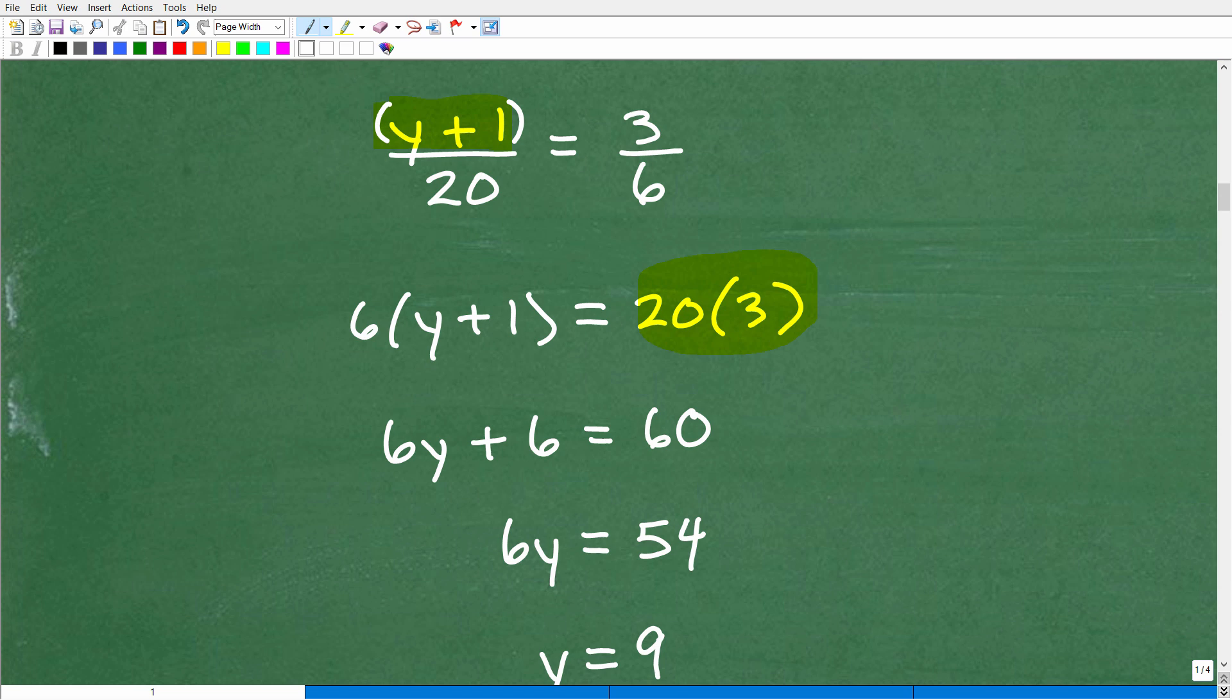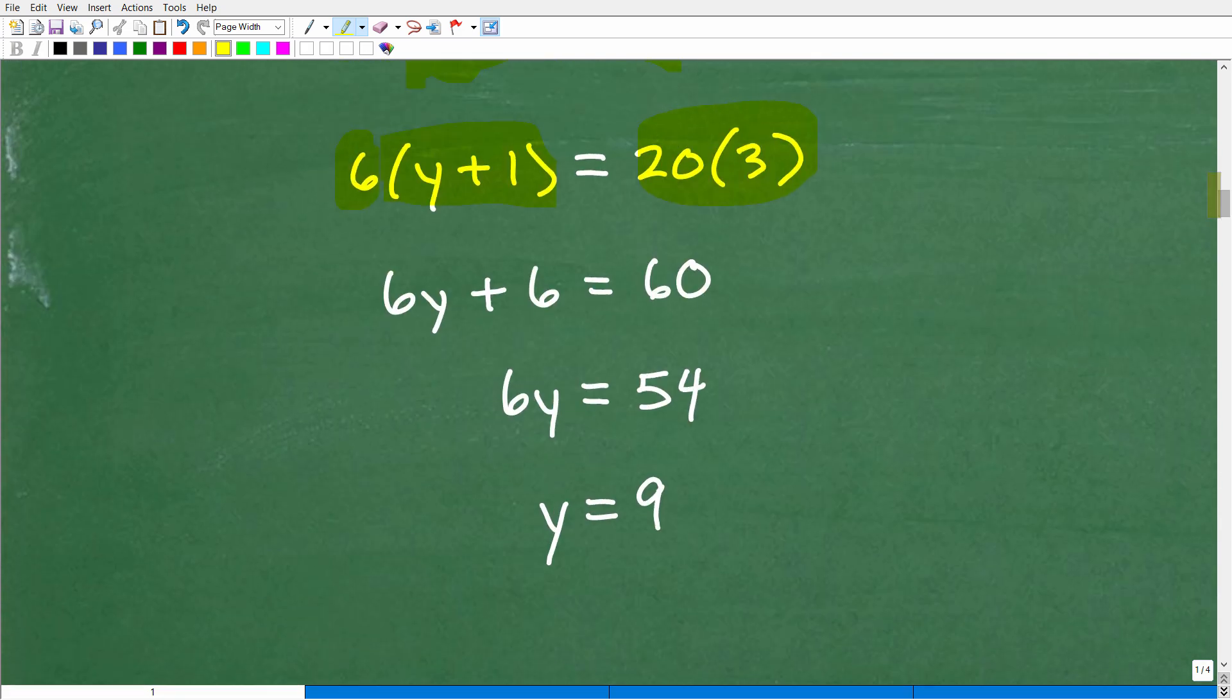Anyways, let's go ahead and do this now. So 6 times Y plus 1, that's 6 times Y plus 1. And then 20 times 3, of course, will be over here. So this is the setup. Now we need to go ahead and solve for Y. So first things first, to do this equation, I need to go ahead and apply the distributive property. So 6 times Y is 6Y. 6 times 1 is 6. And then 20 times 3, of course, is 60.